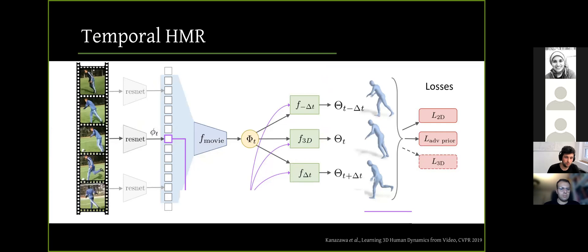And also in a recent extension called Temporal HMR, they extended HMR to work with videos. They utilize a temporal CNN module in between the feature extractor, ResNet in this case, and the SMPL regressor. And this temporal information helps to produce smoother and stable results over time.